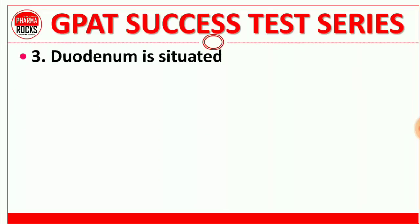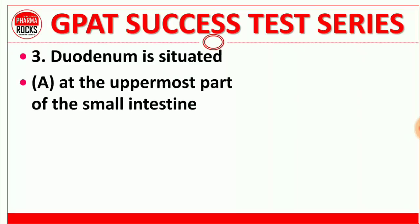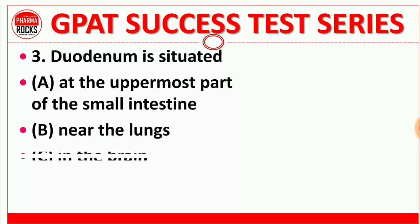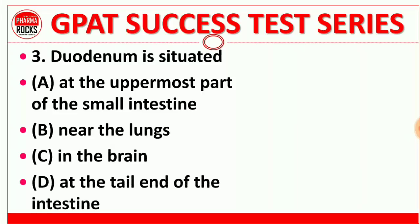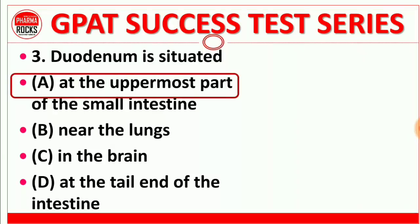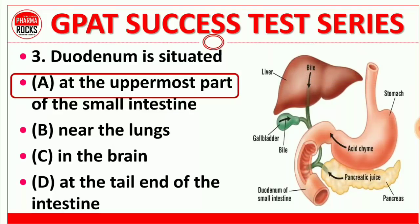Question number 3: Duodenum is situated at the uppermost part of the small intestine, near the lungs, in the brain, or at the tail end of the intestine? The right answer is at the uppermost part of the small intestine. We can see the diagram of our digestive system including the liver. Here is the duodenum — it is the uppermost part of the small intestine. Right answer is option A.